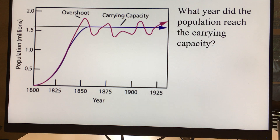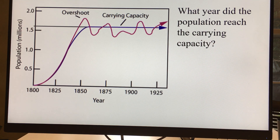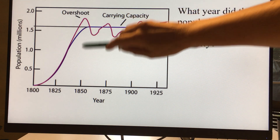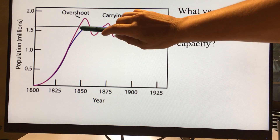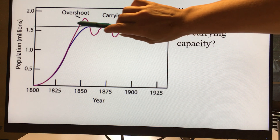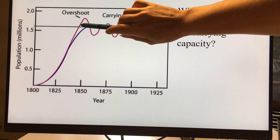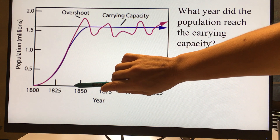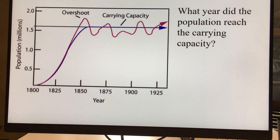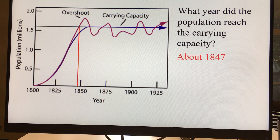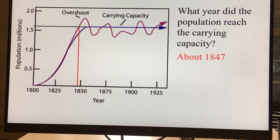If we ask what year did the population reach the carrying capacity, you basically figure out where this line intersects and come down to the x-axis. It would be at approximately the year 1847.